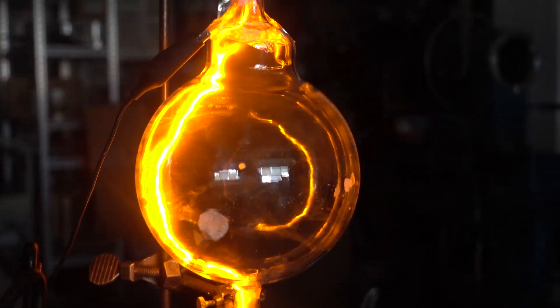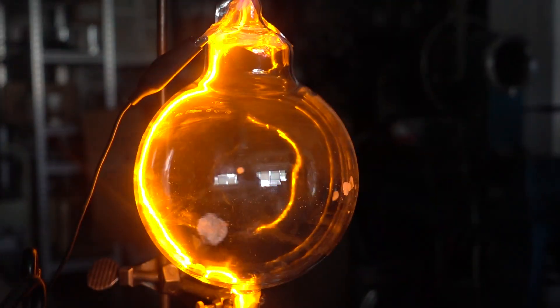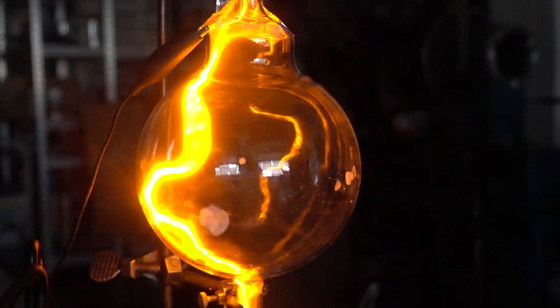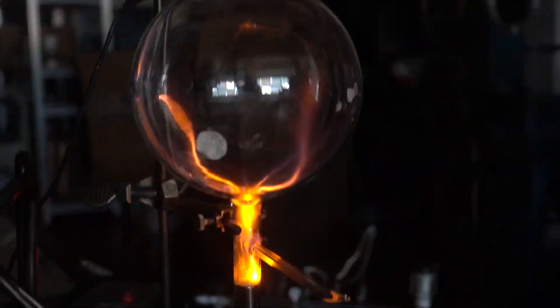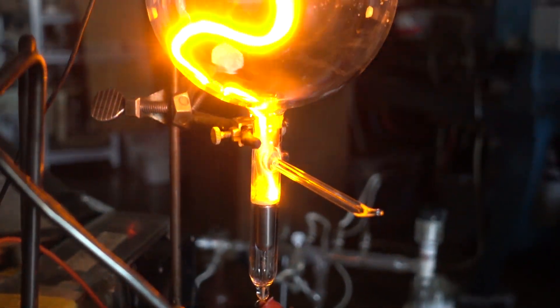So here we have roughly 160 torr of argon with sodium hydroxide that's been placed in the electrode cup down below. There's also some on the sidewall.